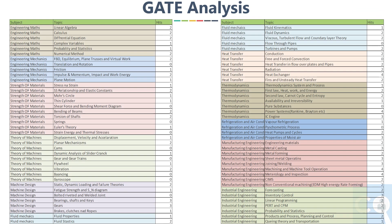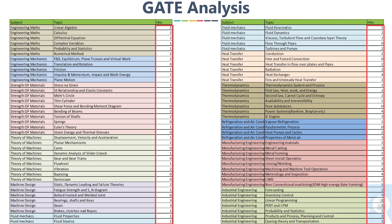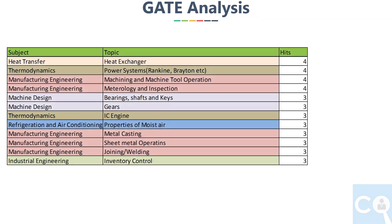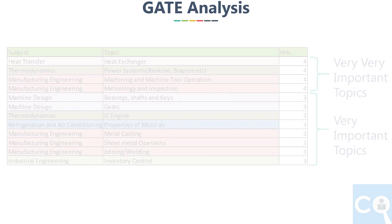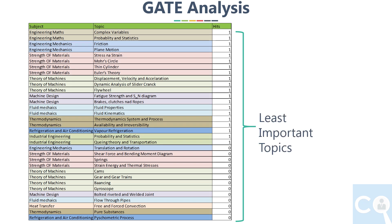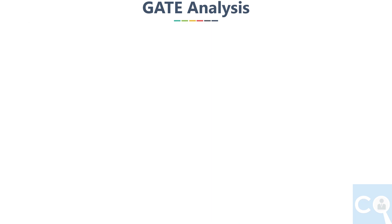In this chart, the first column shows the subject and the next column shows the topics within each subject. The following column shows how many times questions came from these topics across those 4 years — we call this the number of hits. Once done, we sort the last column from largest to smallest, which gives us the topics from which questions were asked every year. Next are topics from which questions came at least 3 years, then at least 2 years, and then topics asked only once or not at all. The key point is: never leave topics from the 1st and 2nd category — you must cover these topics.